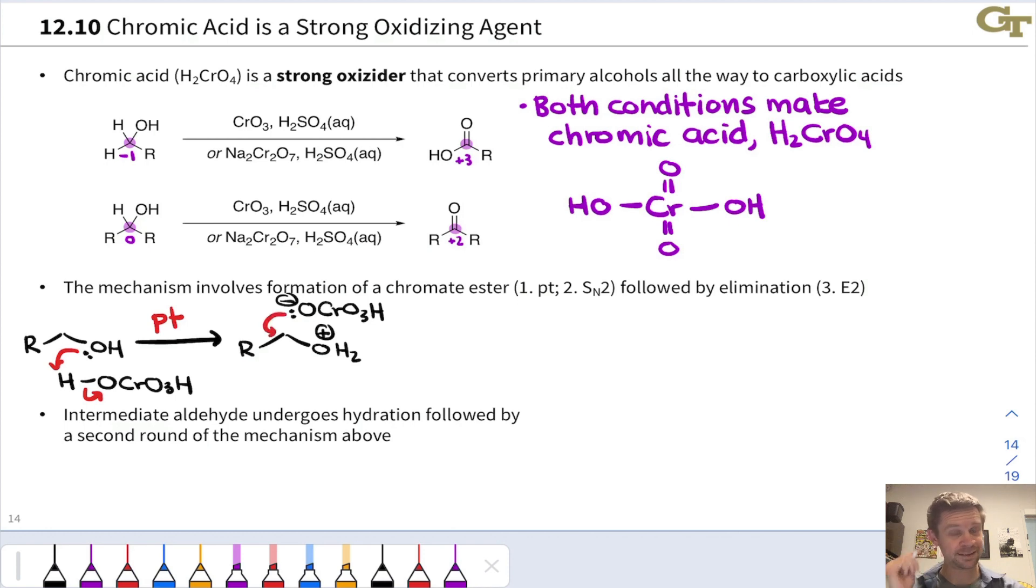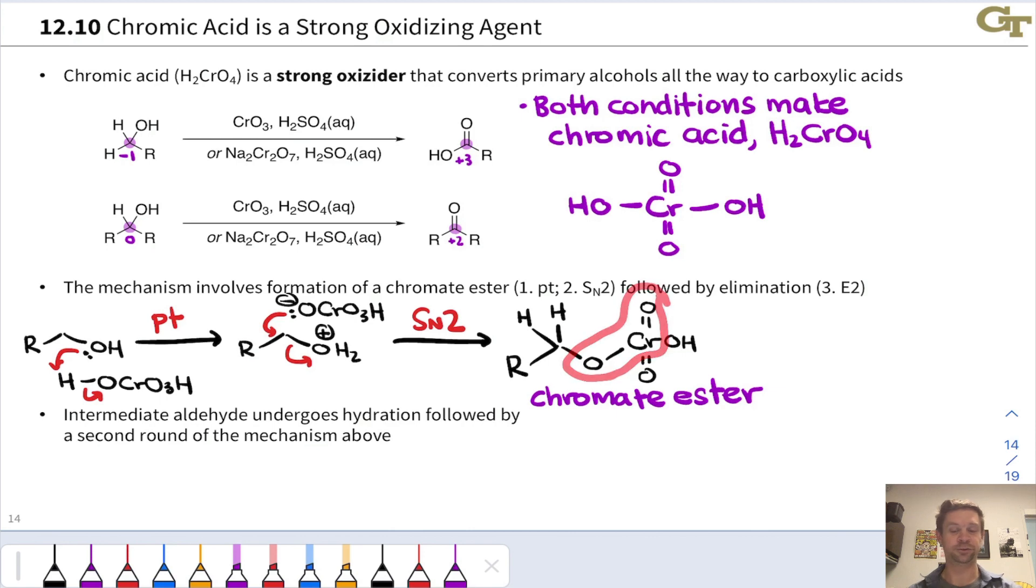That conjugate base of chromic acid can now add in at the electrophilic carbon linked to this water leaving group. This is an SN2 step, and this establishes the chromate ester intermediate. There are other mechanistic possibilities for this process, but this to me seems the simplest. This is a chromate ester. It's called a chromate ester because we have a Cr=O double bond and a Cr-O single bond, reminiscent of a carboxylic ester.